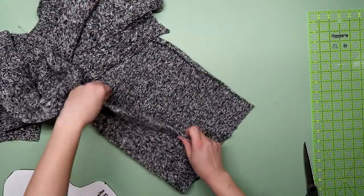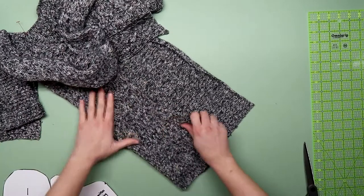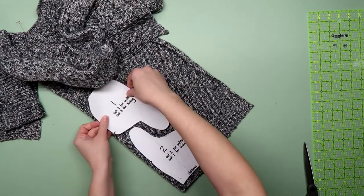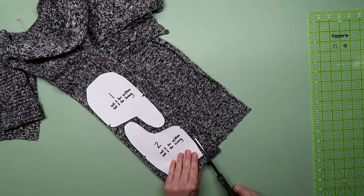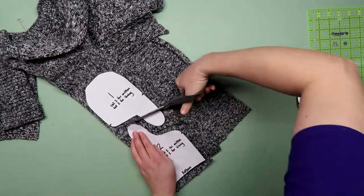I doubled over the fabric because you want two pieces for each pattern. This way when you cut it out you will have a right and a left of each pattern piece. Go ahead and cut out all the pieces you will need. Remember you will need a right and a left for each pattern piece.